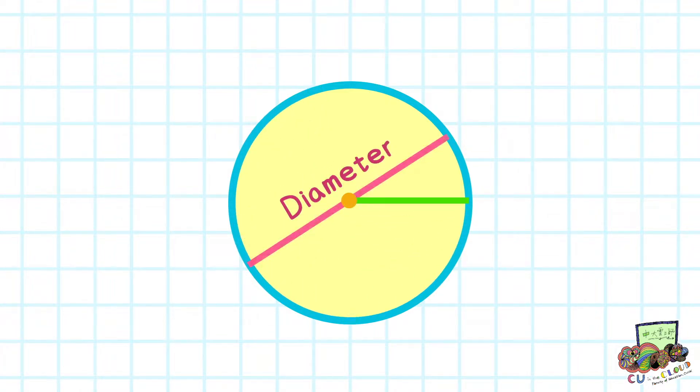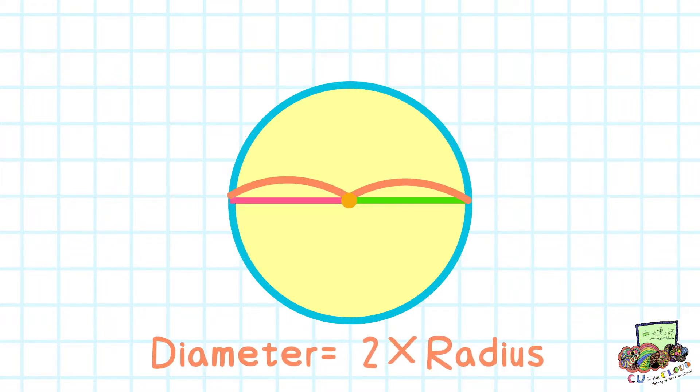Diameter is a line segment that connects two points of the circumference passing through the center. Can you see the relationship between radius and diameter? The diameter is twice the length of the radius.